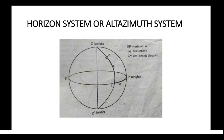The coordinate systems are: the horizon system, equatorial system, and ecliptic system. The first one is the horizon system, which is also known as the alt-azimuth system. The position of a star is determined by two coordinates: azimuth and altitude. So this horizon system is also known as the alt-azimuth system.